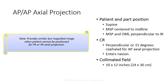Both of these views can be performed AP as well, with the patient supine and the CR centering at the nasion. For the reverse Caldwell or AP Axial, the tube would need to be angled 15 degrees cephalic in the AP projection. One noticeable difference in the radiographic presentation is that the orbits will be significantly more magnified when performing these views AP.